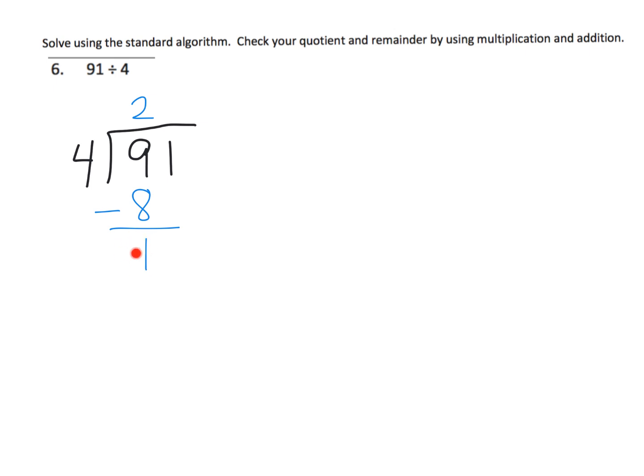Now when we have that 1 ten left over, plus the 1 one over here, that means all together we have 11 ones. We have 11 left over. Now we're going to take those 11 and divide them amongst the 4 groups, which means each of the 4 groups gets 2 dots. So we've used up 8 dots again. And then how many dots are we going to have left over? We're going to have 3 dots left over. So our answer is 22, remainder 3.